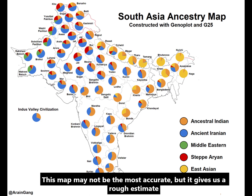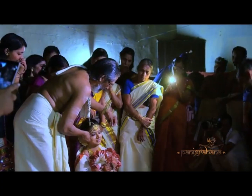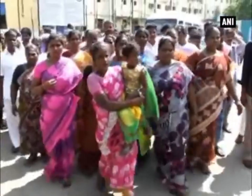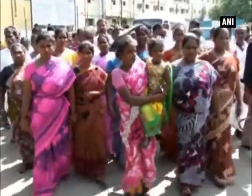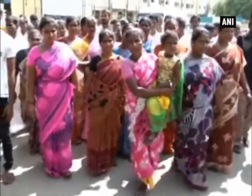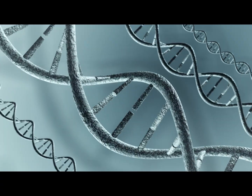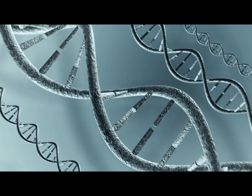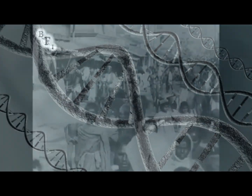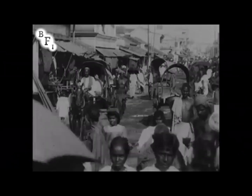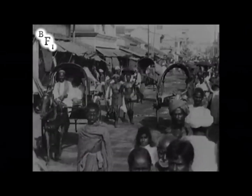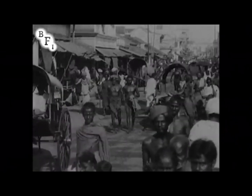Meaning a Brahmin who is at the top of the caste system, and a Dalit who is considered untouchable, even within the same ethnic group, will be genetically different from each other when it comes to their ancestry. And although the caste system has been outlawed in India since 1950, we still see the realities of it to this day.